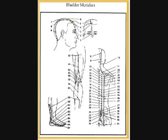UB40 continued: muscular atrophy, pain, numbness and motor impairment of the lower extremities, hemiplegia, abdominal pain, vomiting, diarrhea. UB41: stiffness and pain of the shoulder, back and neck, numbness of the elbow, numbness of the arm.